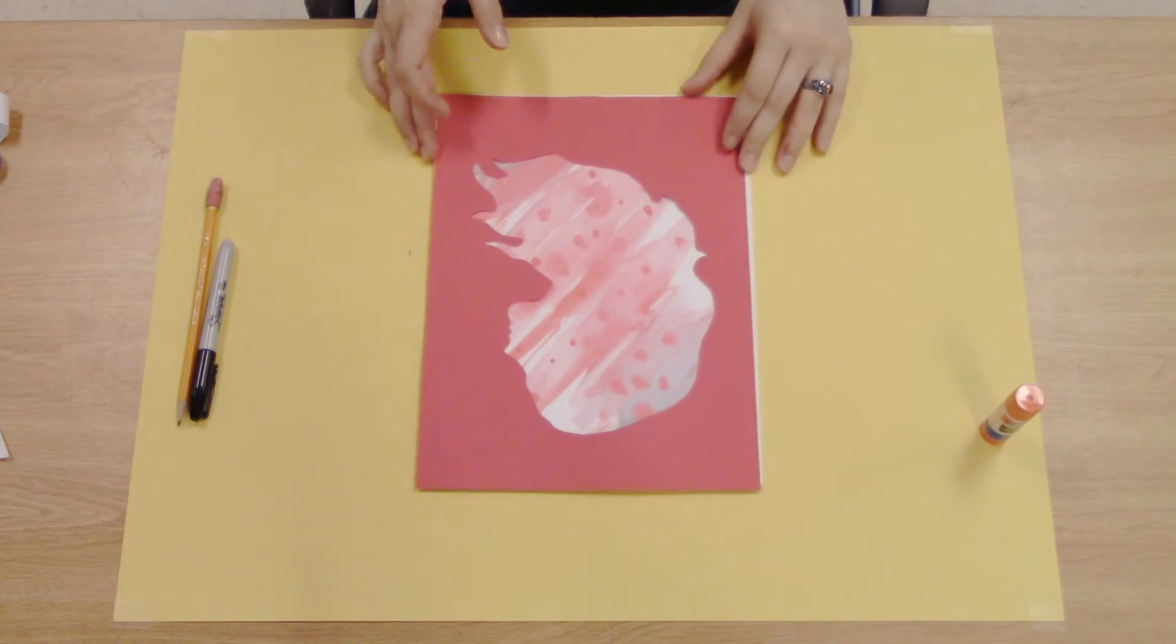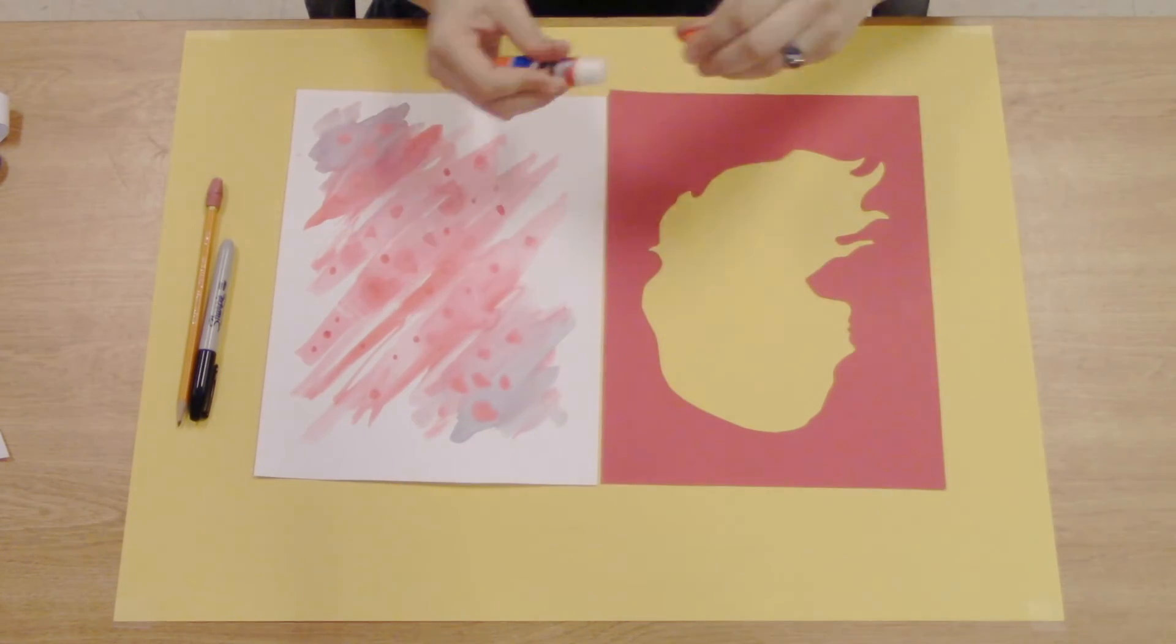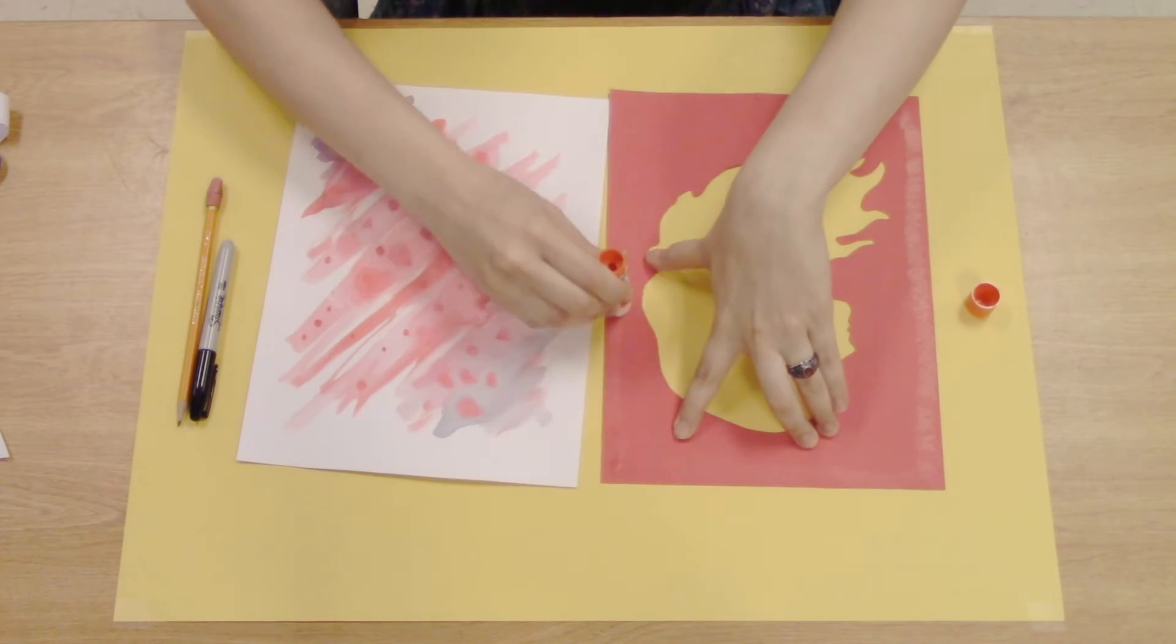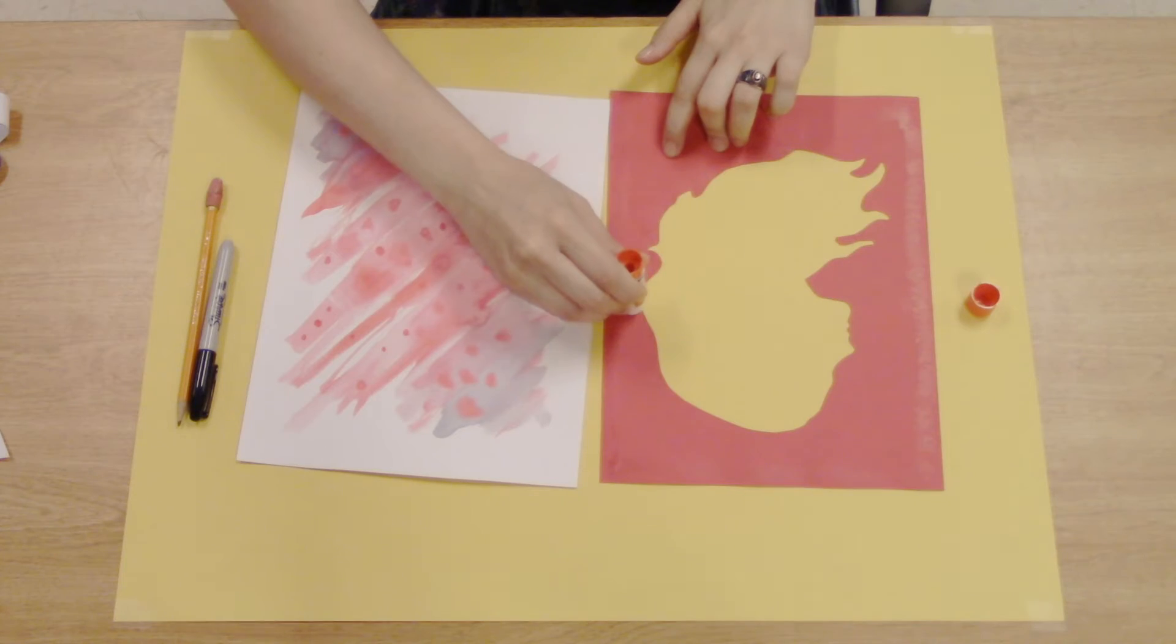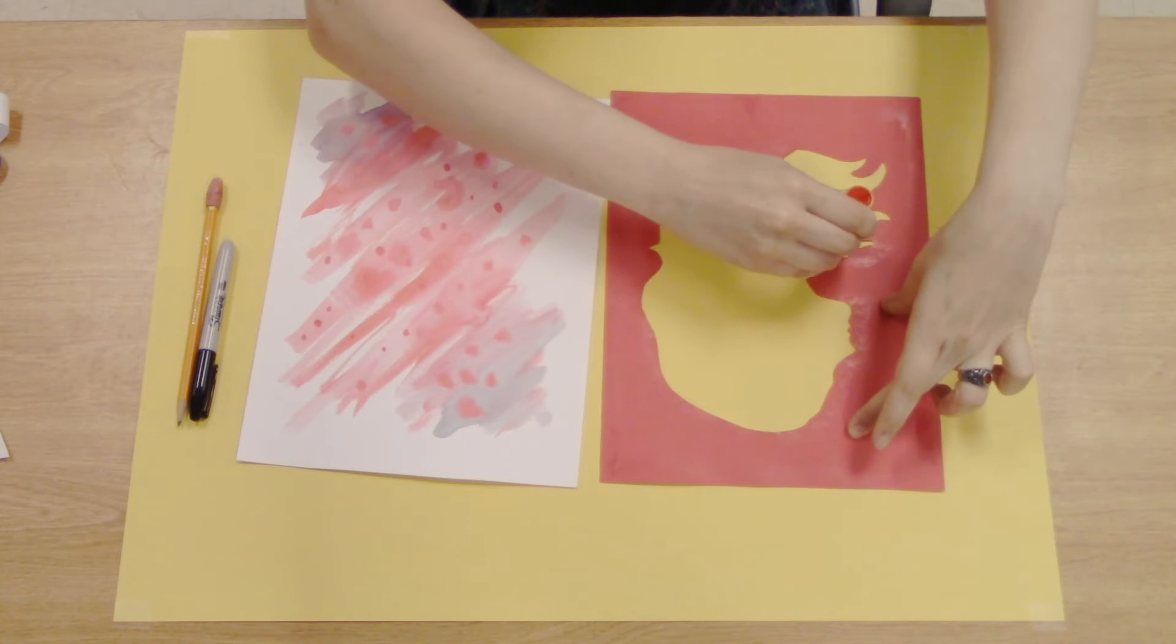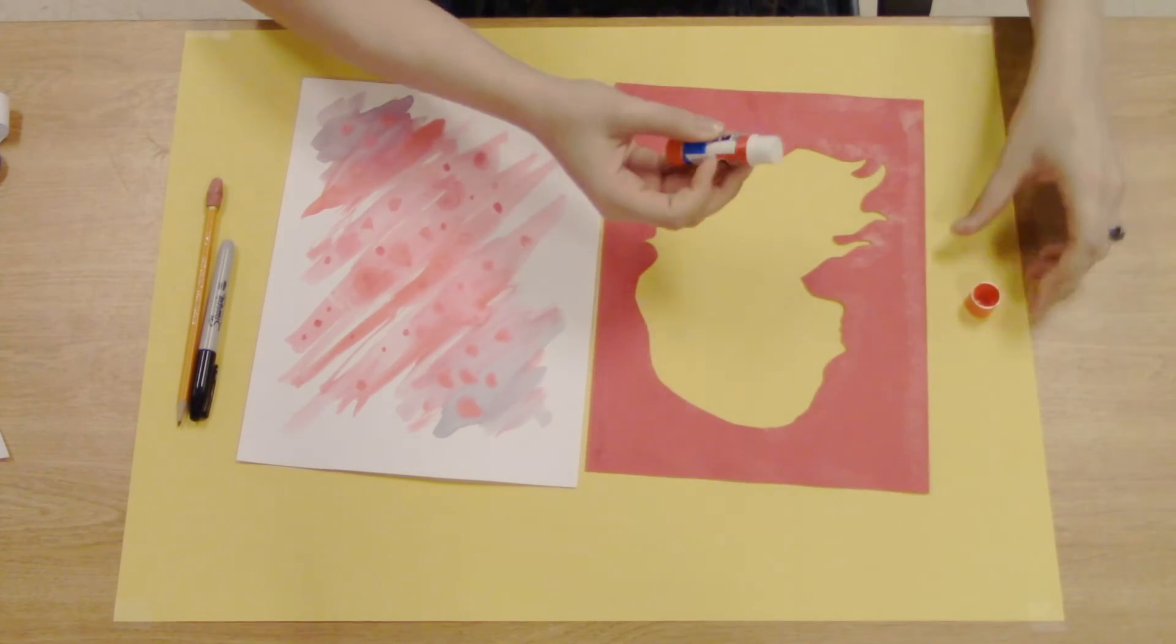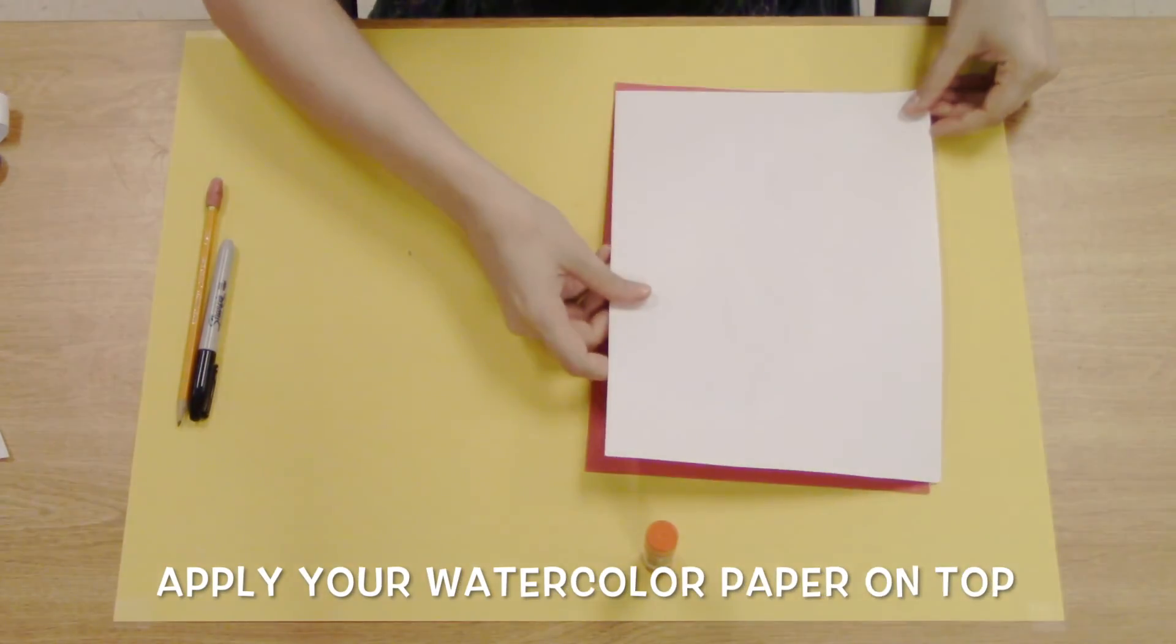I think I like this one the best, so I'm going to keep it like this. So I'll flip my construction paper over and use the glue stick to glue it down. Make sure you get the outer edge as well as the inner edge of the construction paper, then apply your watercolor paper on top.